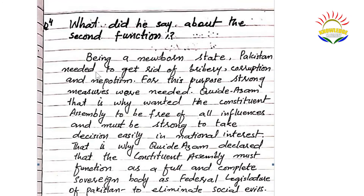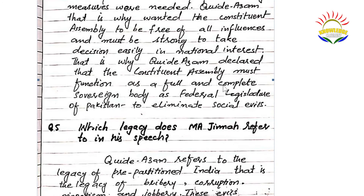Question number four: what did he say about the second function? Being a newborn state, Pakistan needed to get rid of bribery, corruption, and nepotism. For this purpose, strong measures needed to be taken. That is why Quaid-e-Azam wanted the constituent assembly to be free from all influences and must be strong to take decisions easily in national interest. That is why Quaid-e-Azam declared that the constituent assembly must function as a full and complete sovereign body and federal legislature of Pakistan — to eliminate social evils.